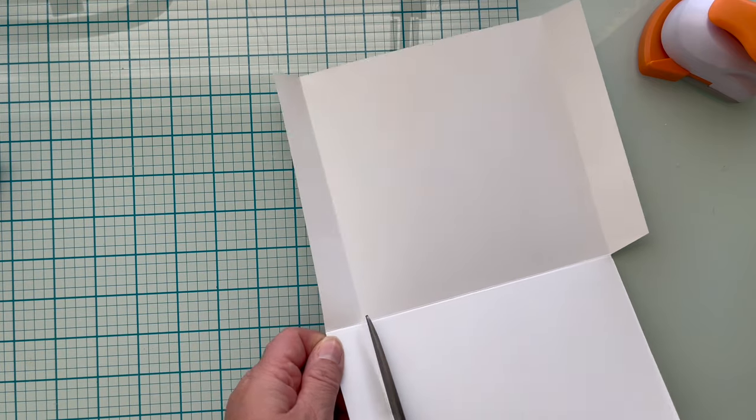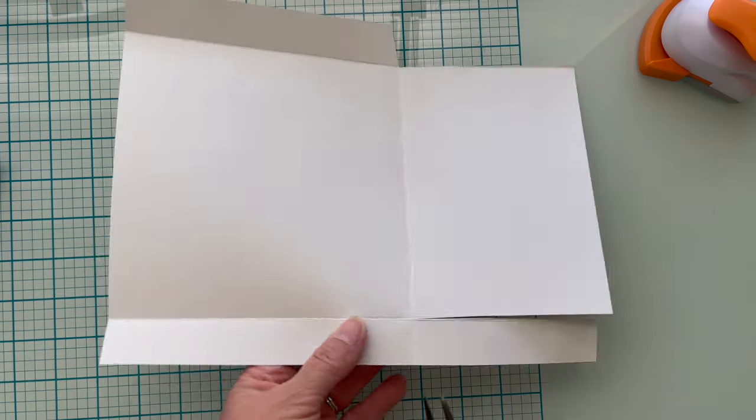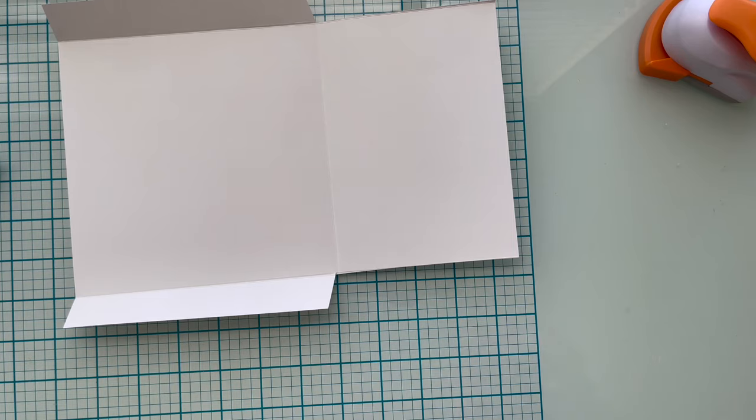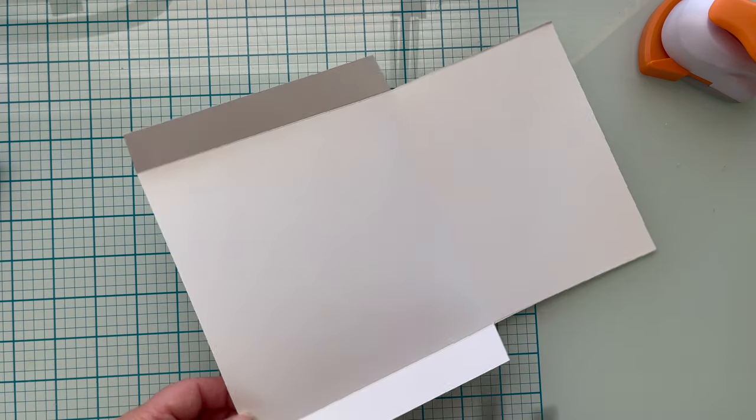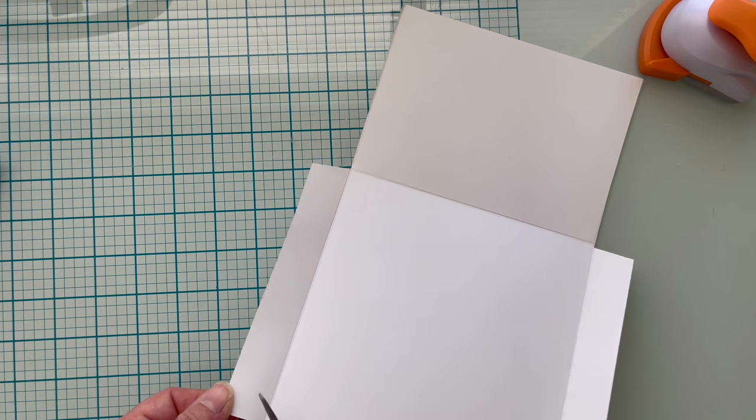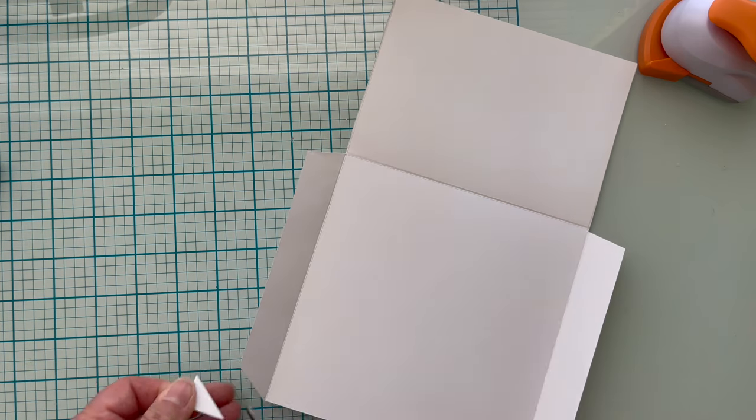So here we go. We're going to cut straight up and when I get to the crossroads I'm just going to angle it and cut downward. Now for this flap we're just going to go to the opposite side and angle cut from the top down.